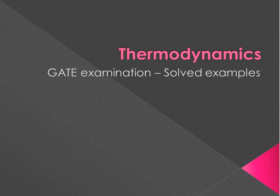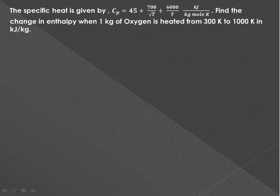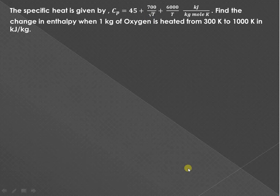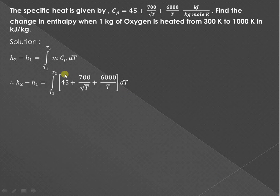Let us try to understand some basic examples on thermodynamics. Suppose the specific heat of a gas is given by this particular expression as shown, and we have to find out the change in enthalpy when 1 kg of oxygen is heated from 300 Kelvin to 1000 Kelvin. The change in enthalpy is given by m·cp·ΔT, and the mass is 1 kg.